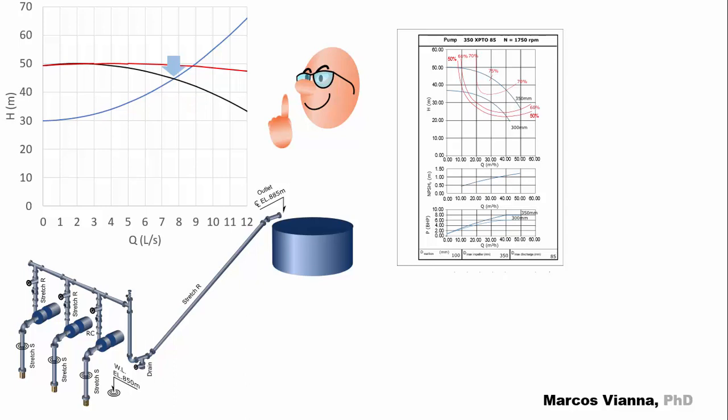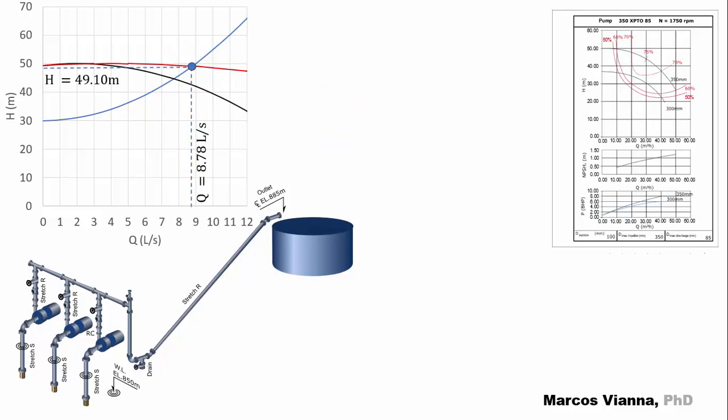This will be the operating point when one pump operates alone, and this will be the operating point when two pumps operate in parallel. In this situation, this will be the flow and the manometric head. Notice that each pump will contribute with half of the total flow. The manometric head will be the same for both of them.